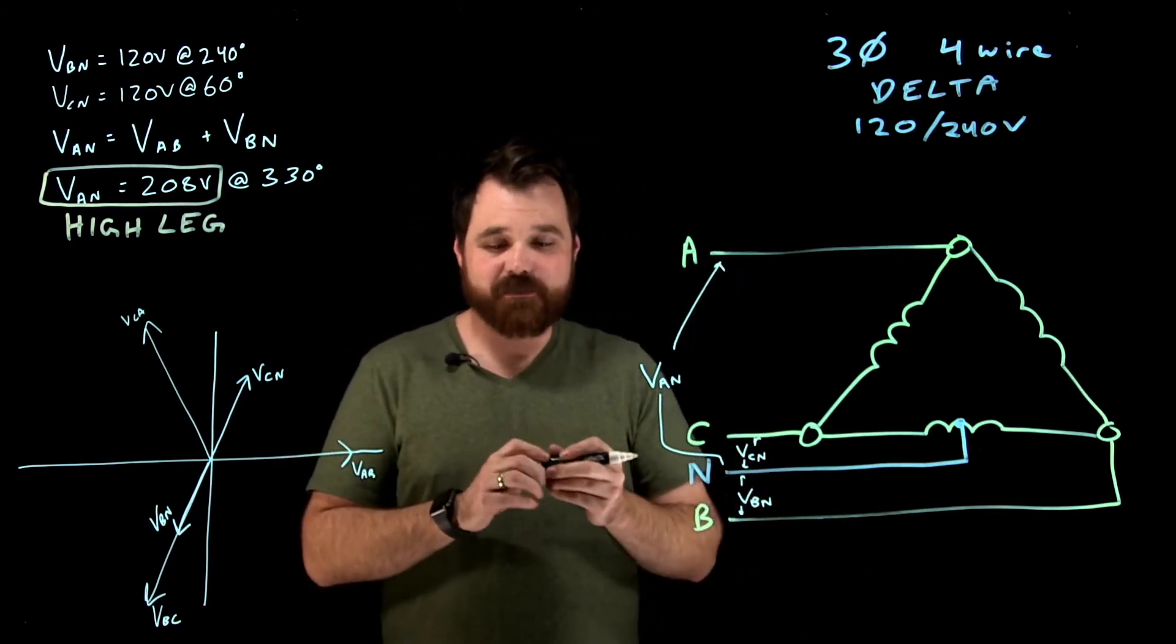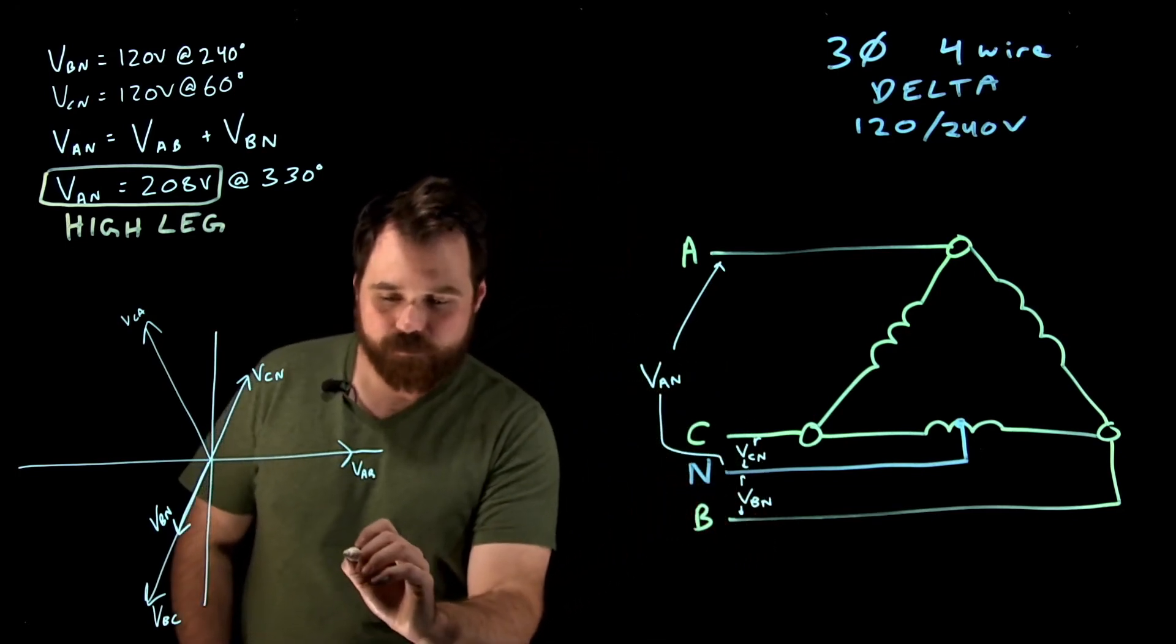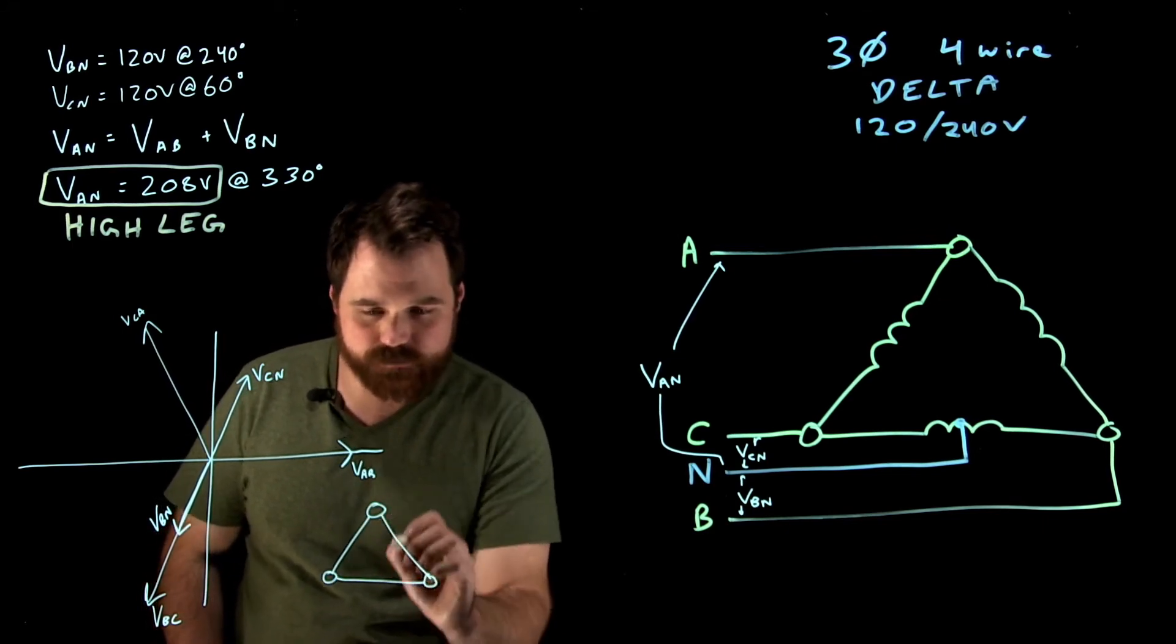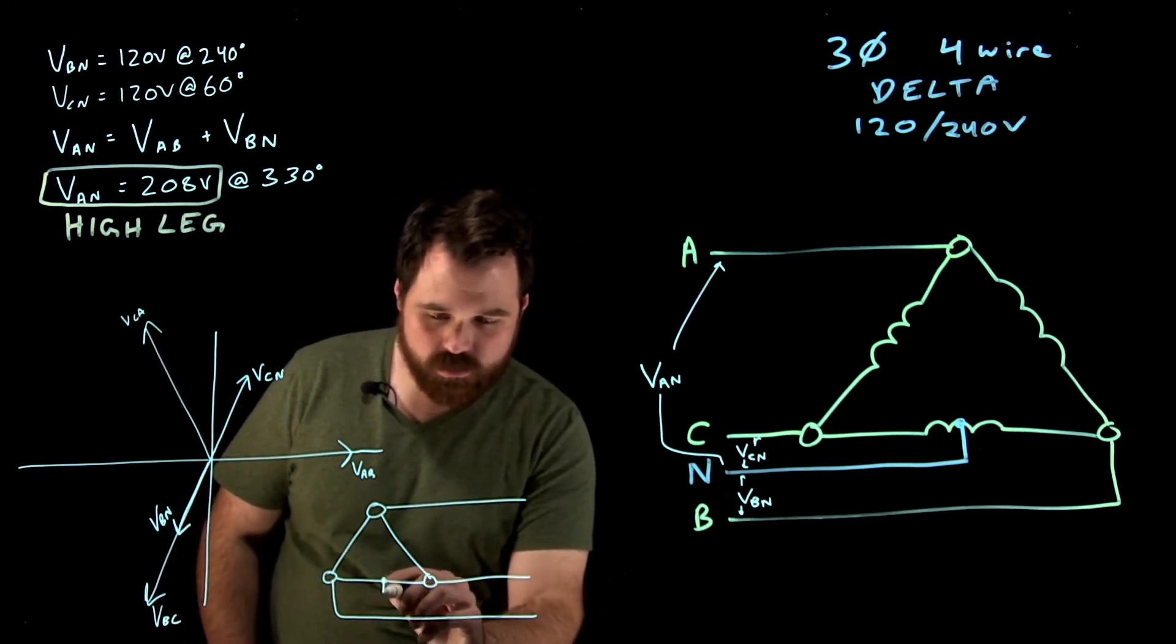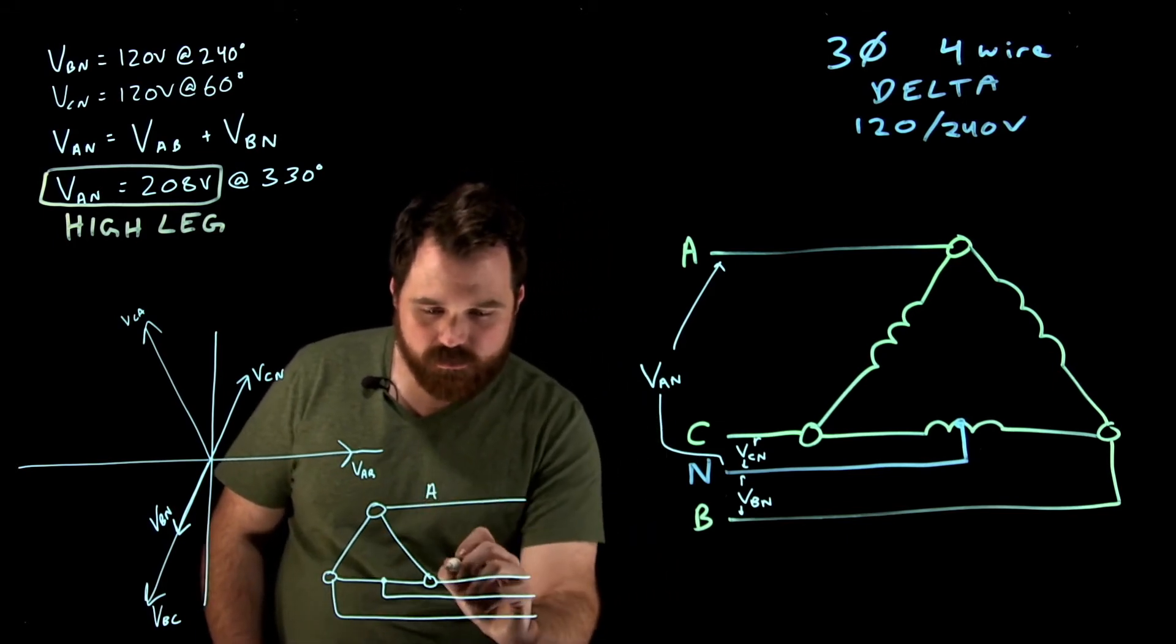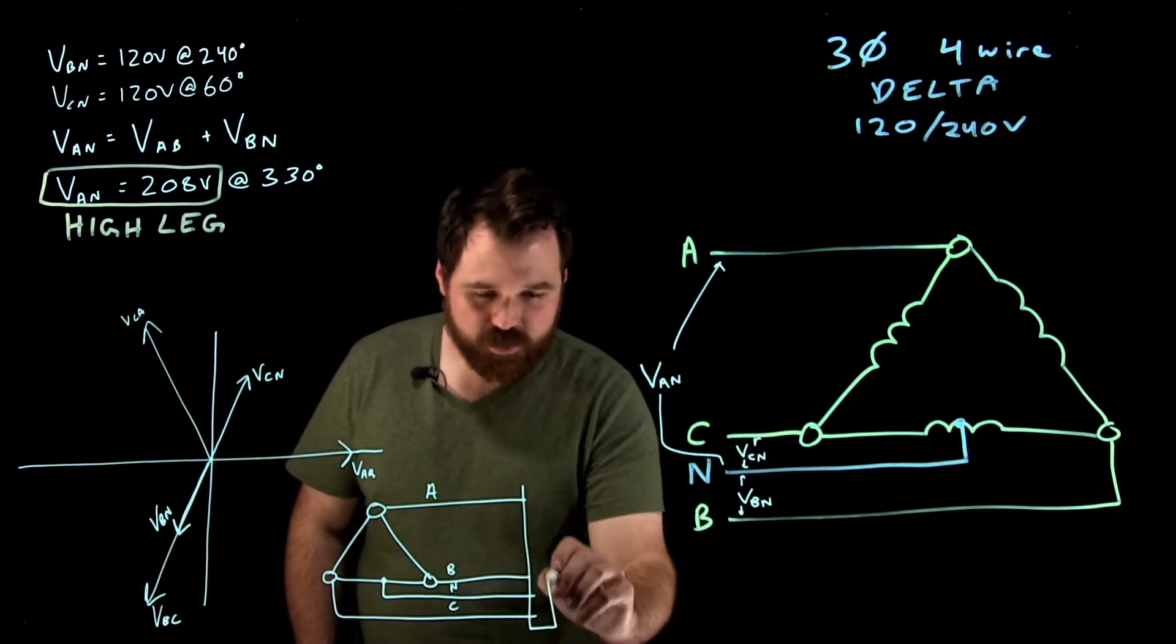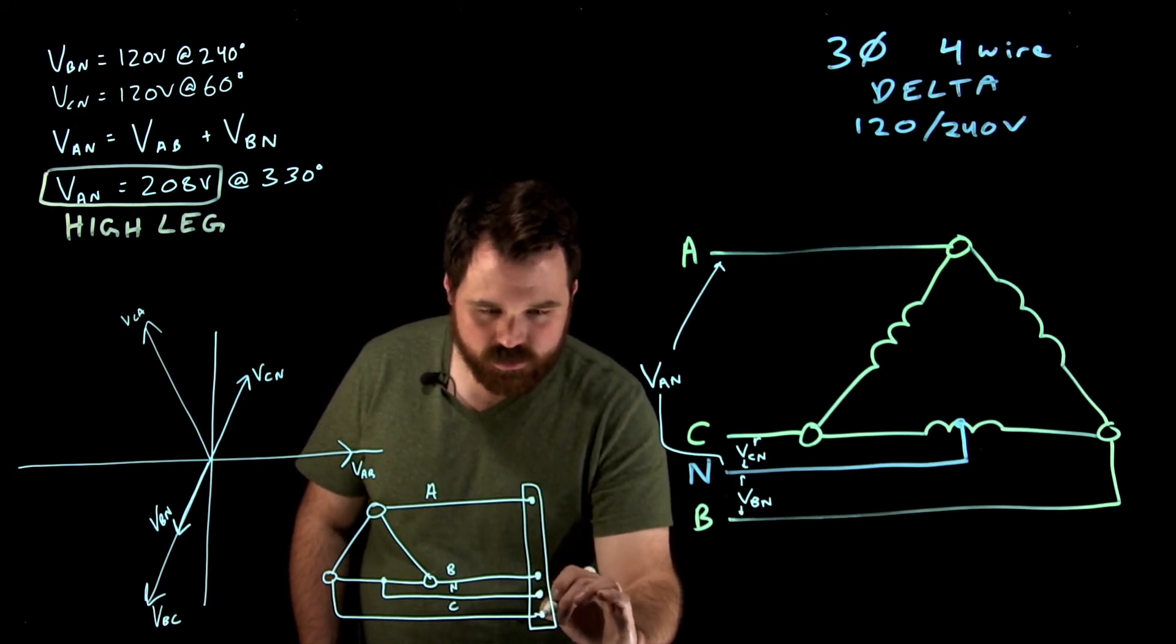Because we cannot connect anything from A to N, you end up with a system that usually works out something like this. So we will have our center tap three phase: A, B, C, and neutral. This is A, B, neutral, and C, just like we have over here. It'll go into some type of splitter. B, neutral, C.